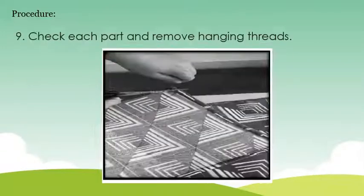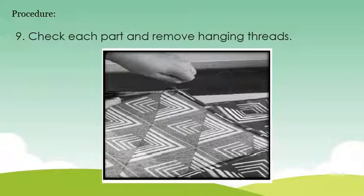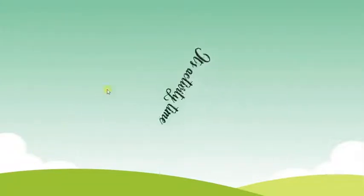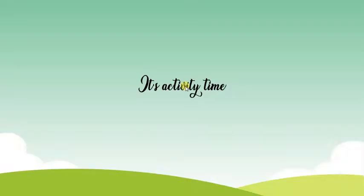Number nine: check each part and remove hanging threads. Number ten: iron the fabric. Okay kids, it's activity time.